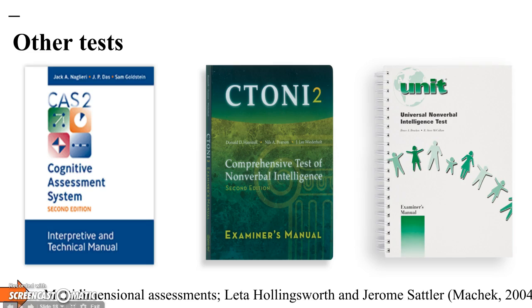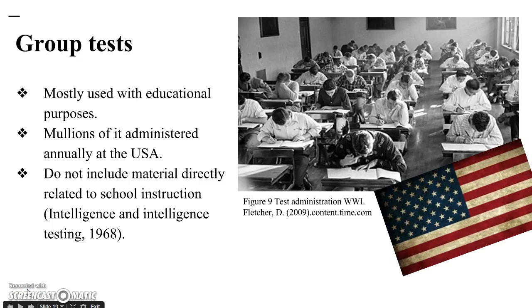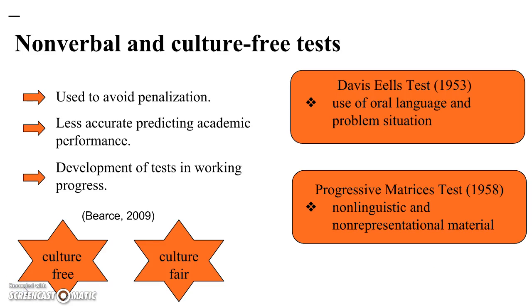Other types include multi-dimensional assessments and group tests. Group tests were first used in the First World War with educational purposes. They are the most common assessments in the United States, with millions administered annually. This type of test includes word meaning, verbal relationships, arithmetical reasoning, form classification, spatial relationships, and abstract symbolic material, without directly including school instruction material. To avoid penalizing individuals who do not speak the language or are more developed in certain areas, non-verbal and culture-free assessments were developed.